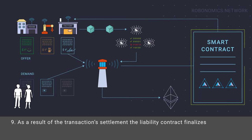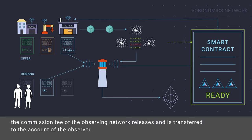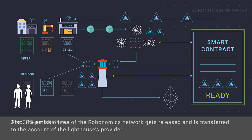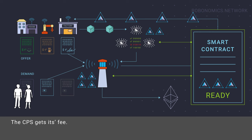As a result of the transaction settlement, the liability contract finalizes: the commission fee of the observing network is released and transferred to the account of the observer. The emission fee of the Robonomics network is released and transferred to the account of the lighthouse's provider, and the cyber-physical system receives its fee.